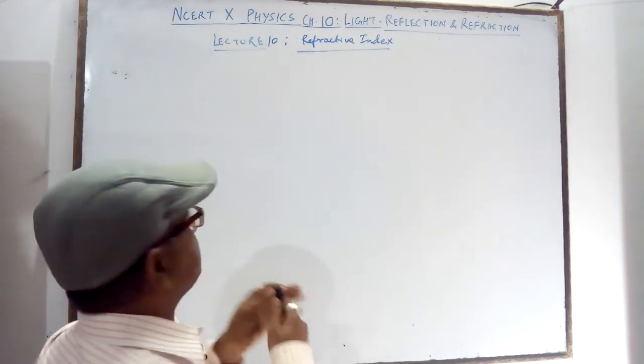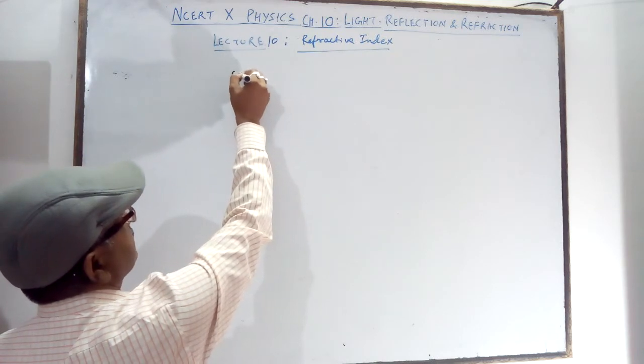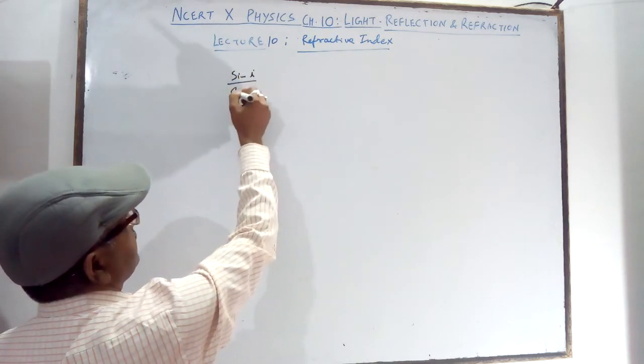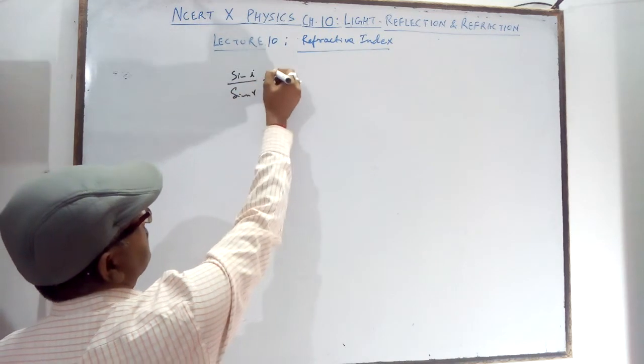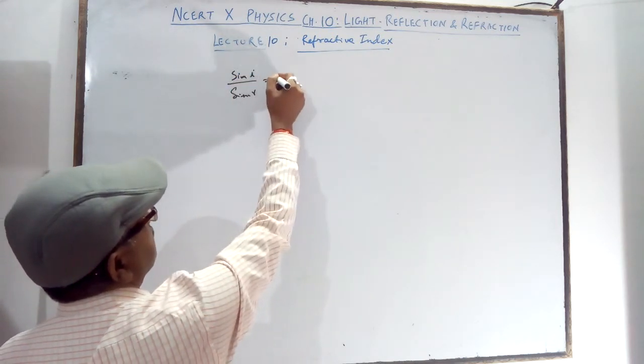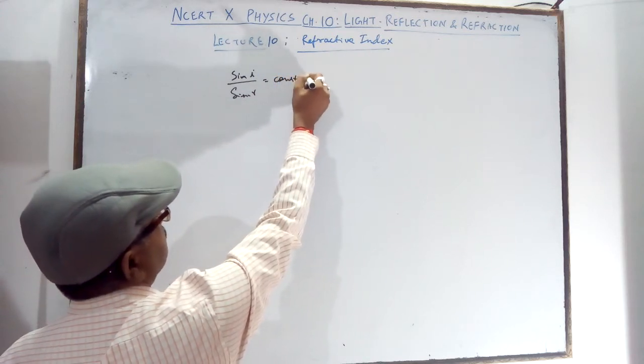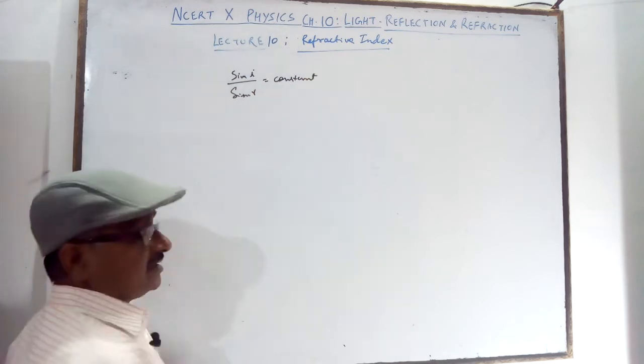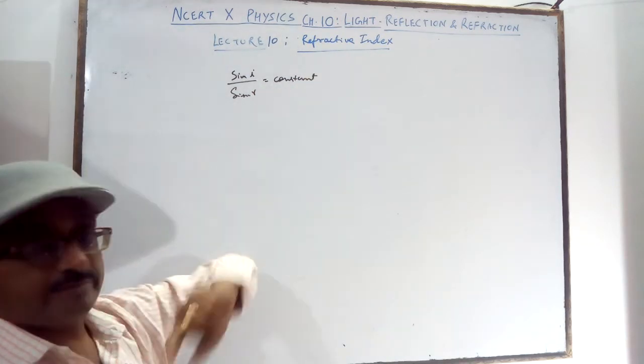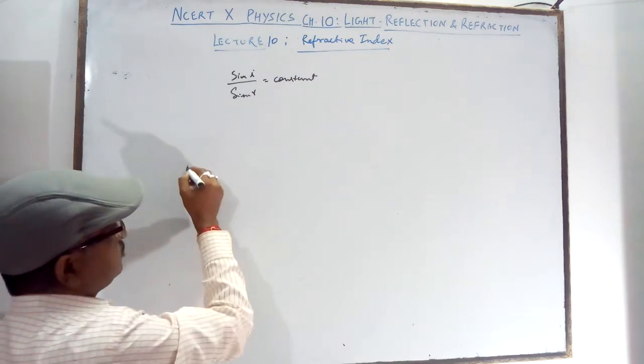Refractive Index we have seen that the sin I upon sin R is called the Refractive Index Constant, which is known by Snell's law. It is a Refractive Index of Medium 2 with respect to Medium 1.